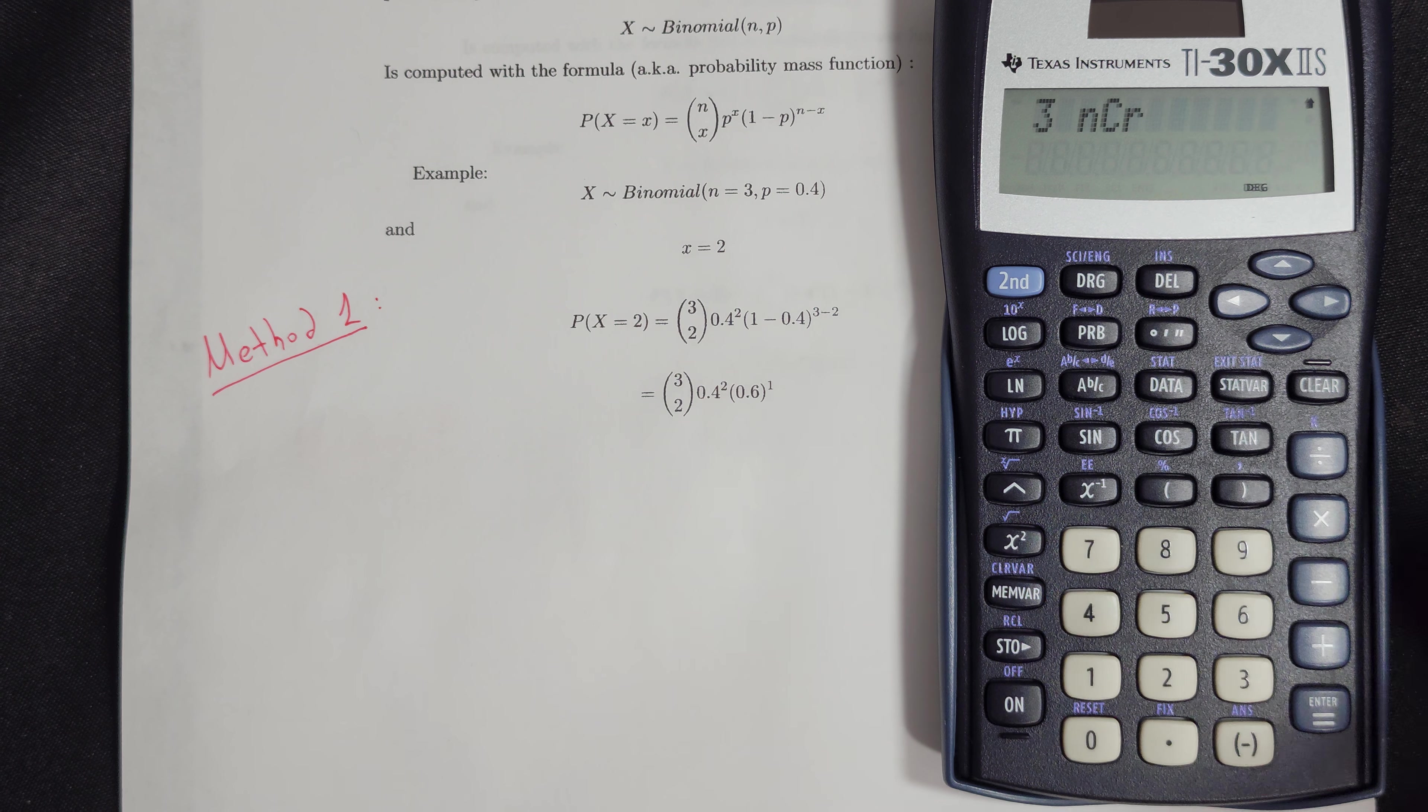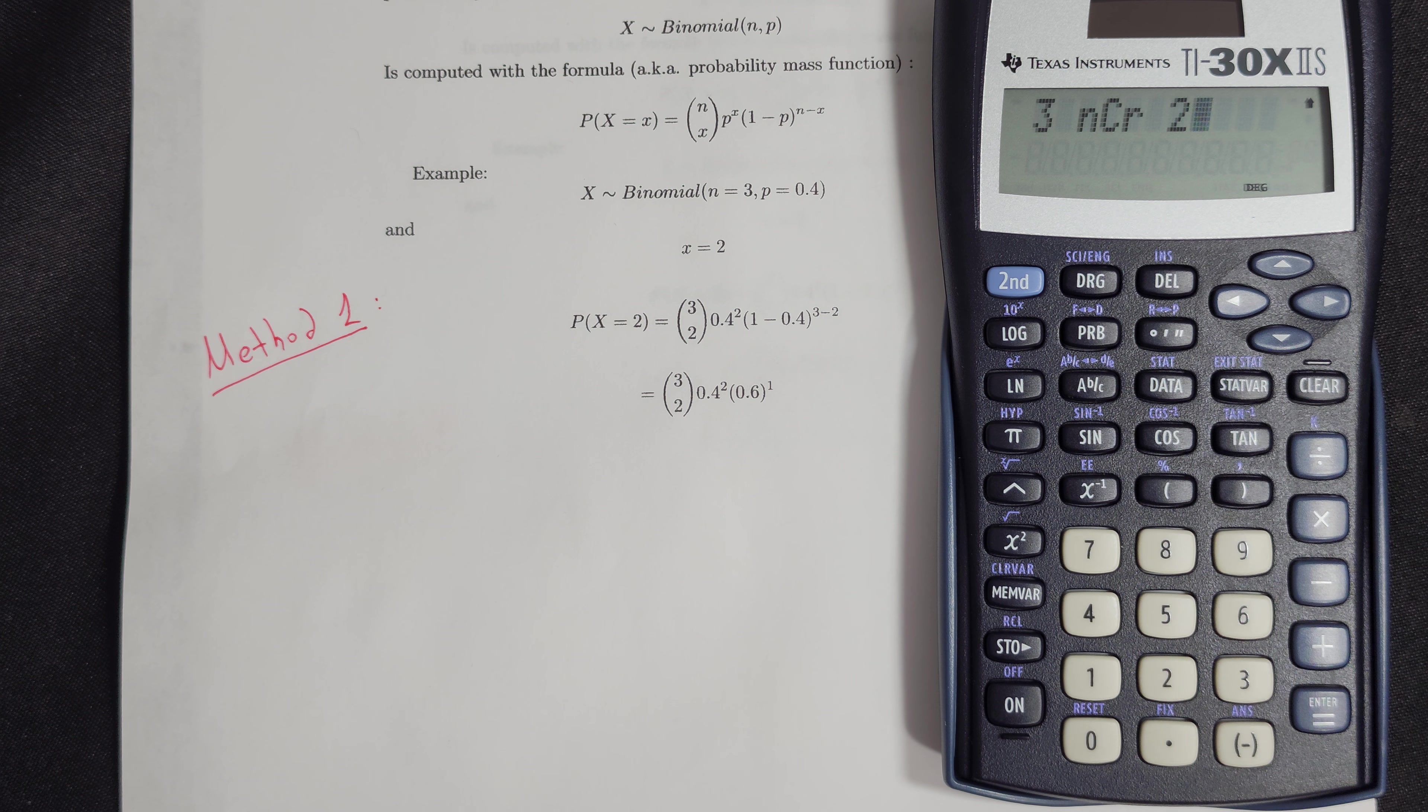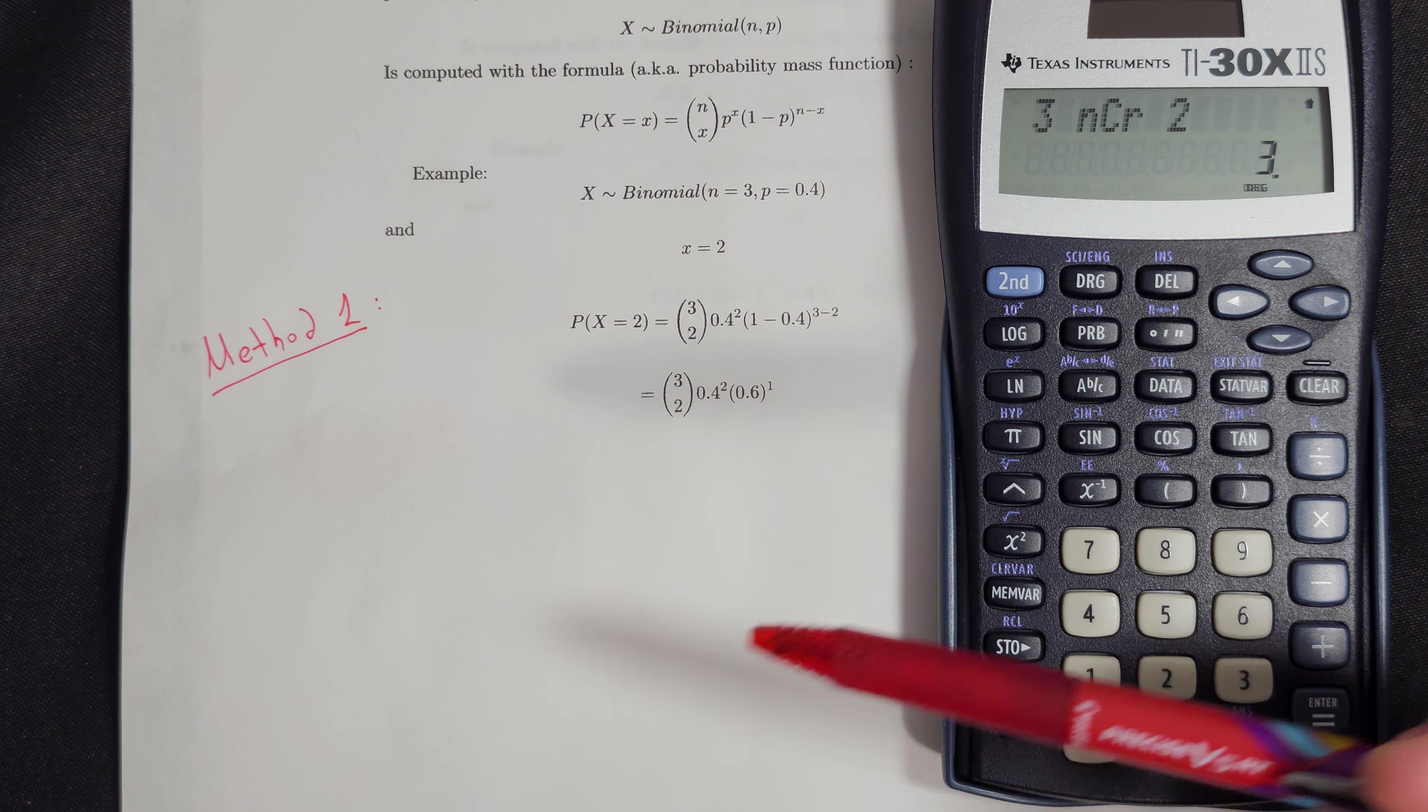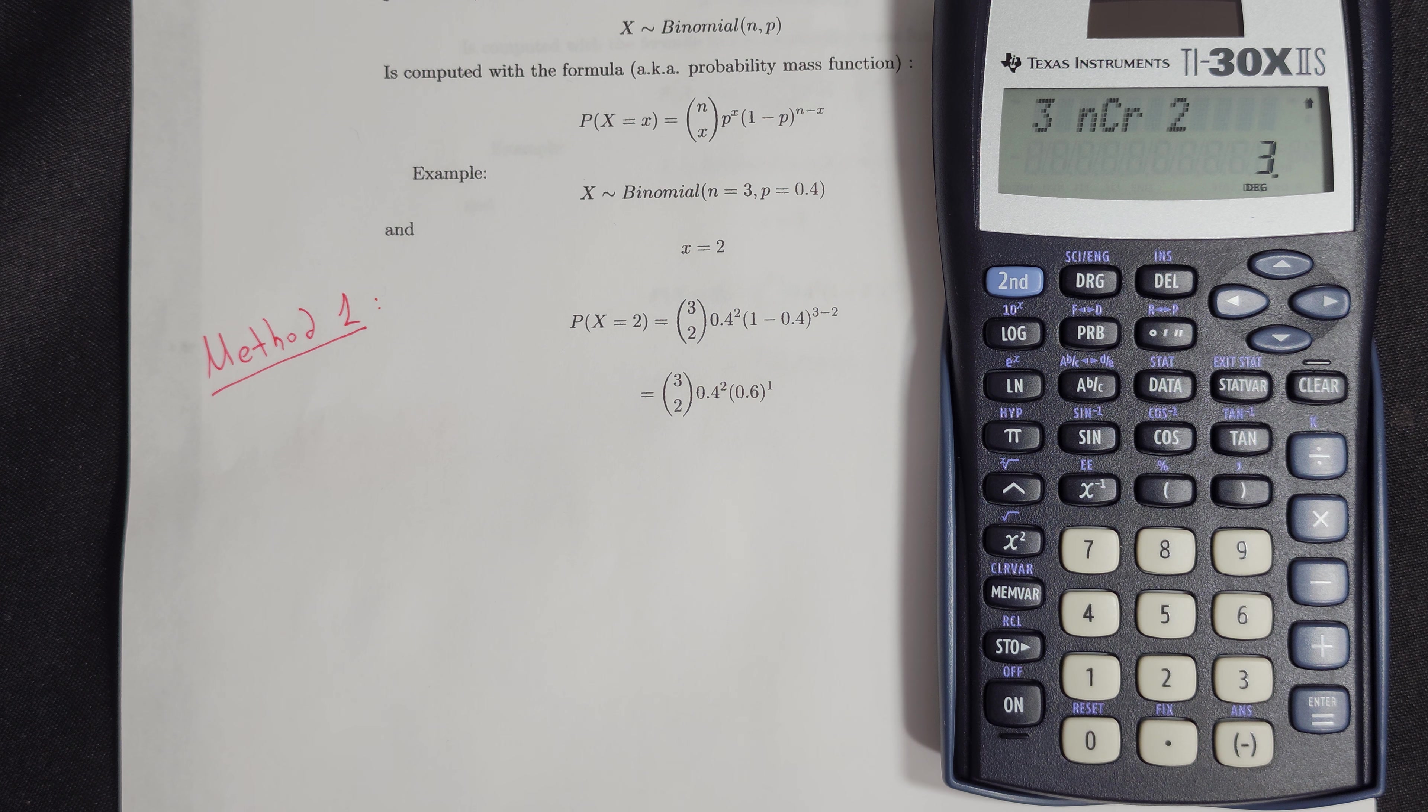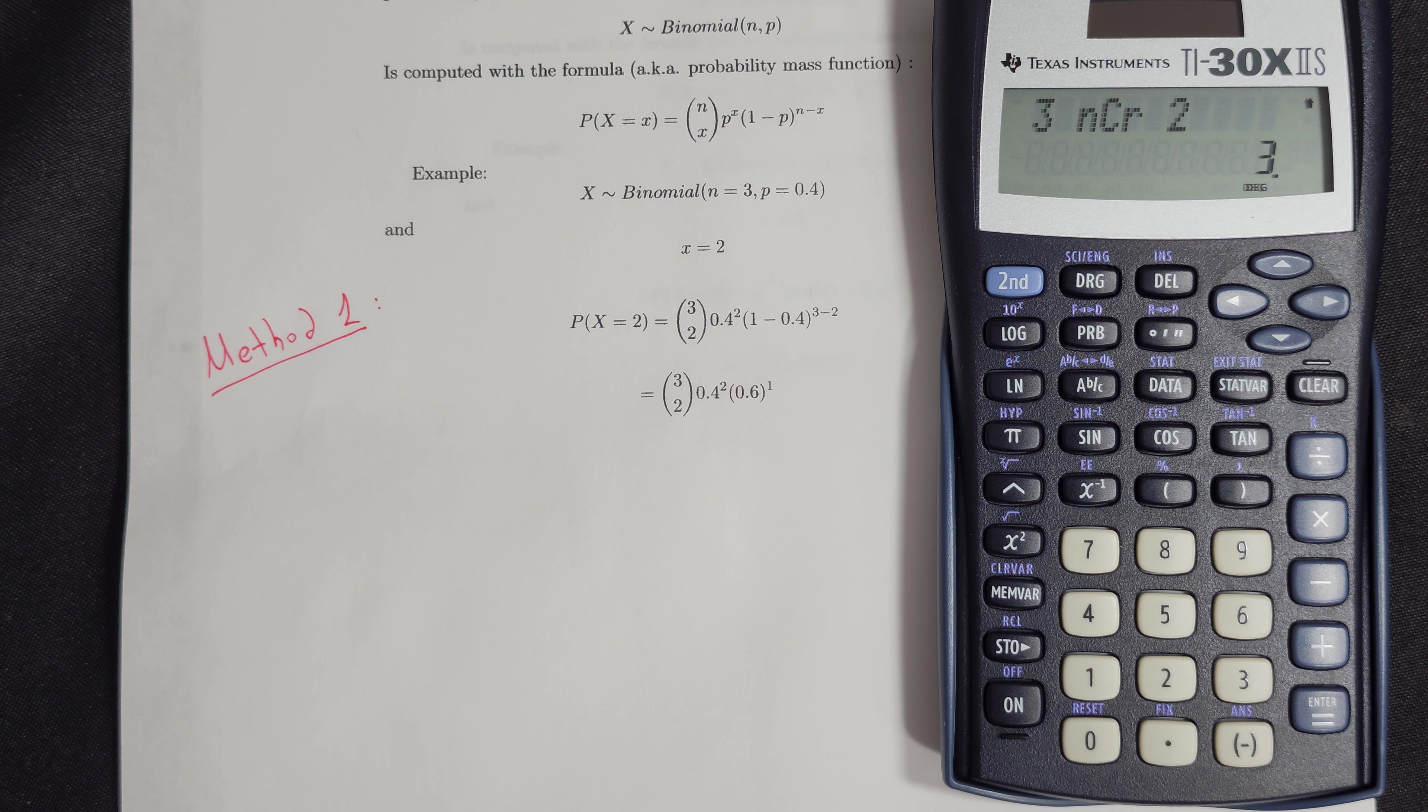So we can see 3 which is the top number, choose. You have to press the second number which is the bottom, which is the R X, 2. So we press enter. So this 3 means that 3 choose 2, the first part, is equal to 3. In other words, there are 3 ways to choose 2 objects from a set of 3 total objects.